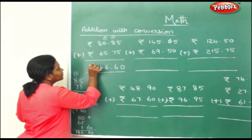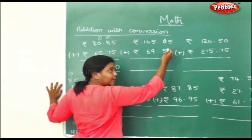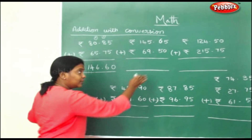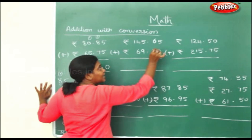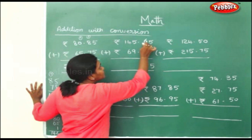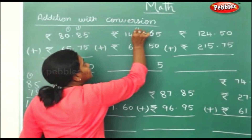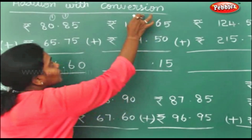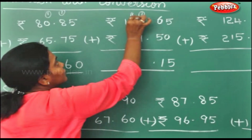So this will be rupees 146. We will do a similar thing with basic simple addition. 6 plus 5 is 11. 9 plus 1 is 10. 10 plus 5 is 15.